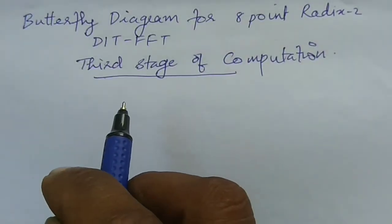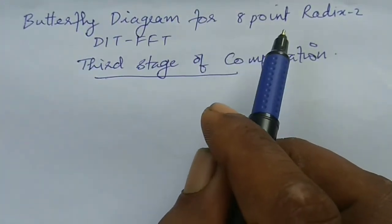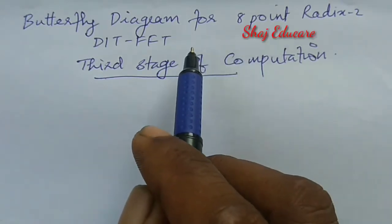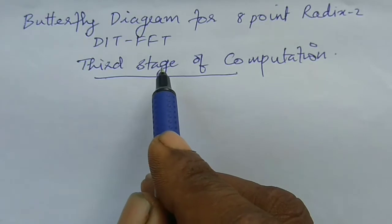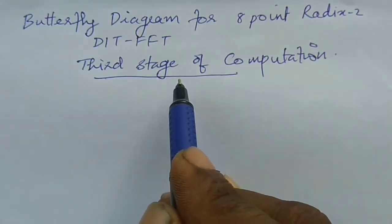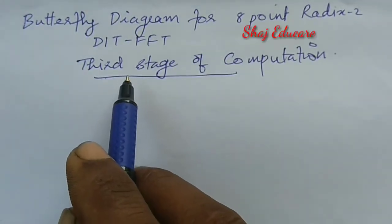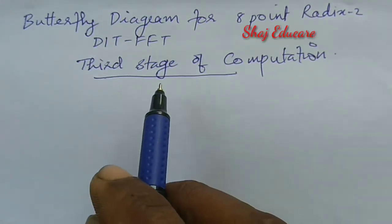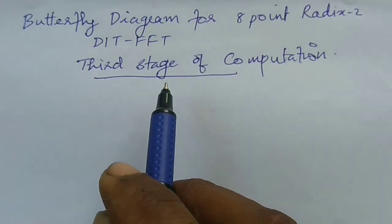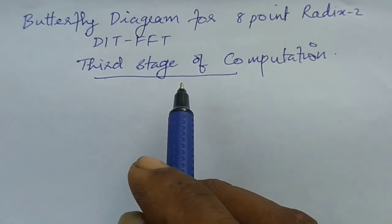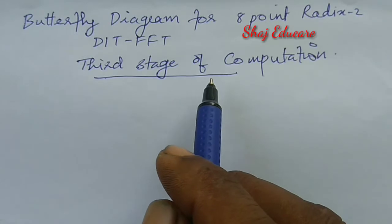Next we are going to discuss the butterfly diagram for the 8-point radix-2 DIT FFT method. We are going to discuss the third stage of computation. The first and second stages of computation were explained in my previous video. Now let us start the third computational stage.